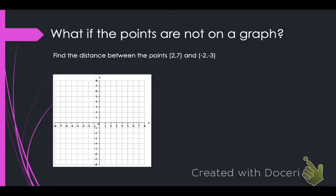Last one. What if the points are not on the graph? So, find the distance between the points two, seven, and negative two, three. You will always be given a graph with this. So, all you have to do first is actually graph the points, which you should know how to do. So, we go x first. So, two, we go over two to the right, and then we go up to seven. So, two, seven is right there. And then we go to the left two, and down three to get negative two, negative three.